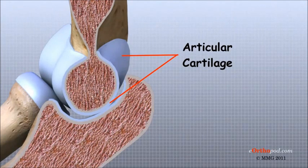Articular cartilage is white, shiny, and has a rubbery consistency. It is slippery, which allows the joint surfaces to slide against one another without causing any damage.